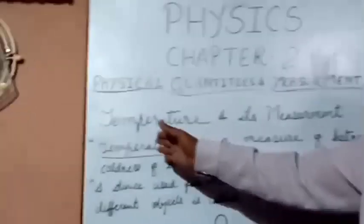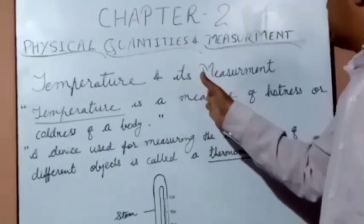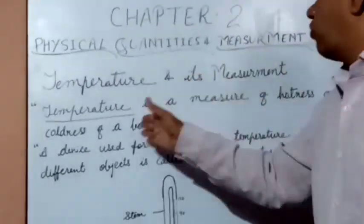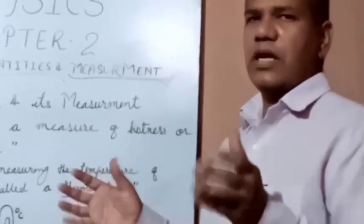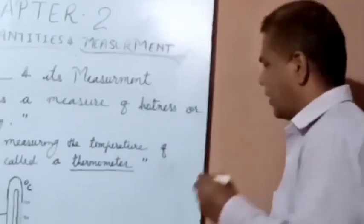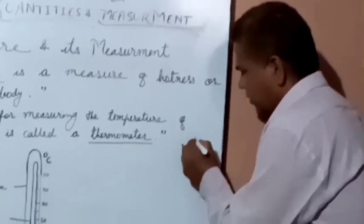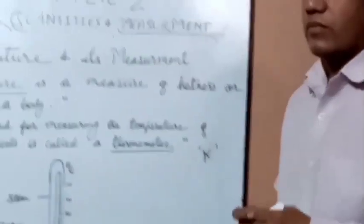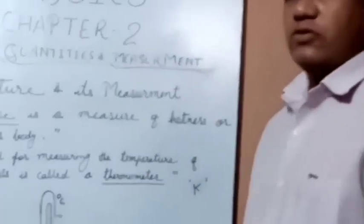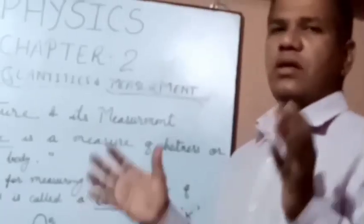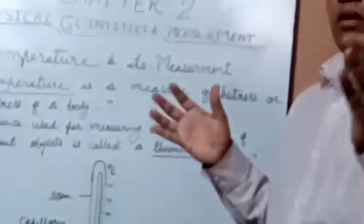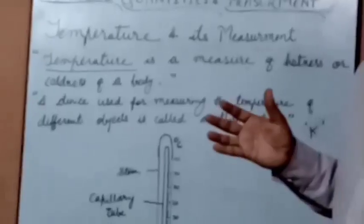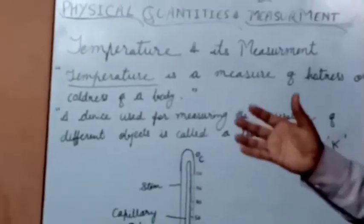Temperature is a measure of hotness or coldness of a body. In other words, the degree of hotness or coldness is called temperature. The unit of temperature is Kelvin, denoted by K. The device used for measuring the temperature of different bodies is called a thermometer. Commonly, the thermometer used in a laboratory is called a laboratory thermometer.